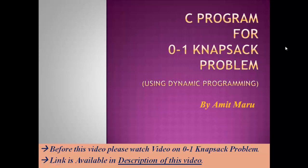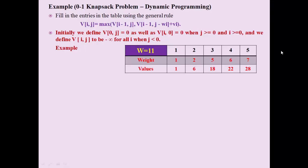Let us start with a brief idea about the 0-1 Knapsack Problem. As per the problem, we have a number of objects and every object has some weight and value. We have one knapsack in which we have to fill different objects. The basic goal is to maximize the total value of our knapsack, but the knapsack has one capacity constraint — capital W — indicating it can carry a maximum of W units.